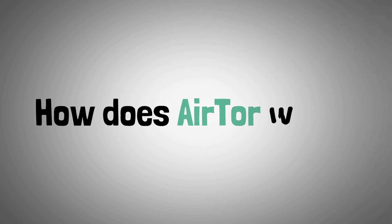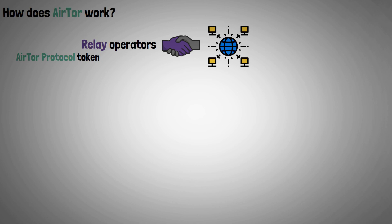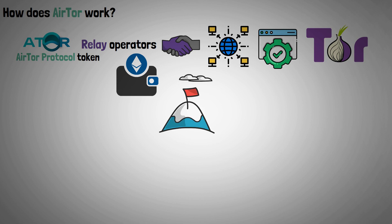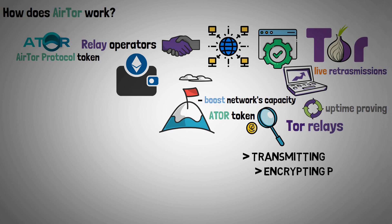Now let's look at how exactly Airtor works. Relay operators who support decentralized networks are rewarded with the Airtor Protocol token. Operators register with an Ethereum address and function as a relay for supported protocols like TOR. The main objective of Airtor is to boost the network's capacity by increasing the quantity of TOR live retransmissions, through a process called Uptime Proving, in which TOR relays earn the Airtor token by transmitting and encrypting packets.